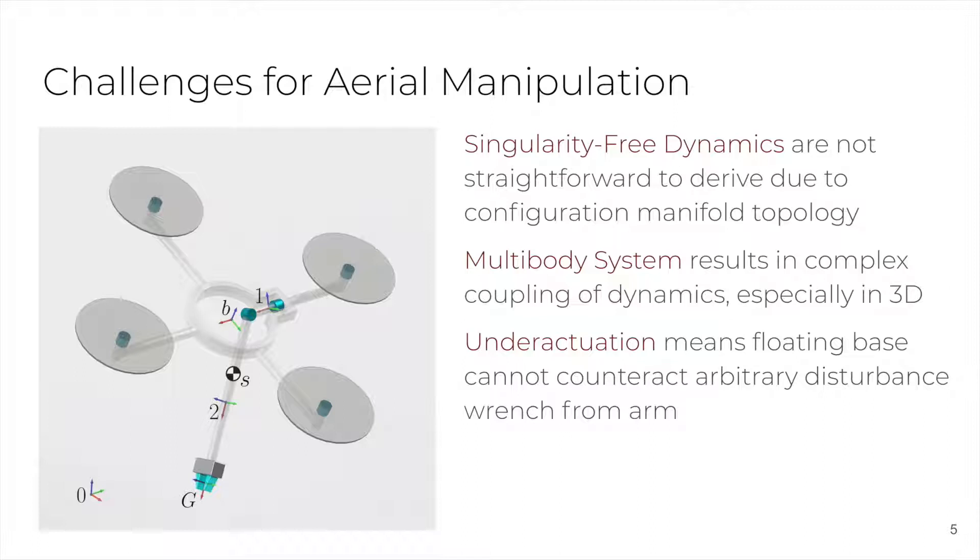Additionally, the coupling between the various rigid bodies of the system results in complex dynamics, especially in 3D. Finally, the under-actuation of the system means that the base cannot counteract an arbitrary disturbance wrench from the arm, making dynamically feasible trajectory planning vital for any maneuvers that are not quasi-static.